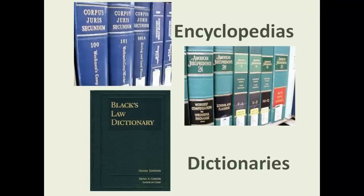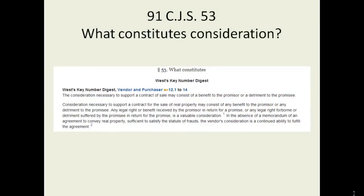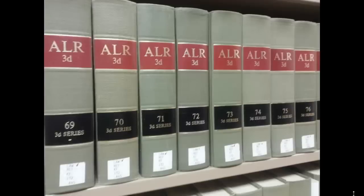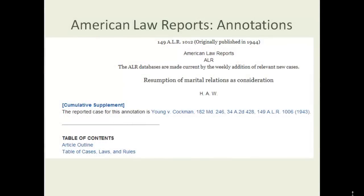Encyclopedias and dictionaries are much shorter treatments that typically focus on particular phrases or situations that lawyers frequently encounter. This is a great way to start your research, particularly if you don't know what area of law you should be looking at. This entry on what constitutes consideration is from the Encyclopedia Corpus Juris Secundum, or CJS — a nice, concise, one-page description. One exception to this category of short entries is a publication called the American Law Reports, or ALR, which contains lengthy essays on discrete areas of law and often has rather quirky but practical discussions. These essays are called annotations.